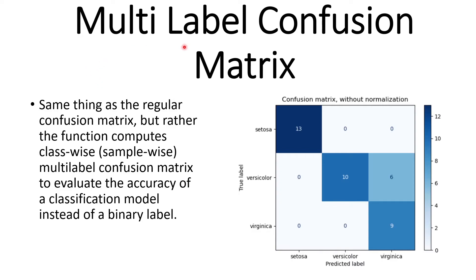Multi-label confusion matrix. This is similar to the regular confusion matrix, but the function computes class-wise or sample-wise results to evaluate the accuracy of a classification model rather than a binary model. Essentially, the confusion matrix can be used for both binary and multi-label classification.